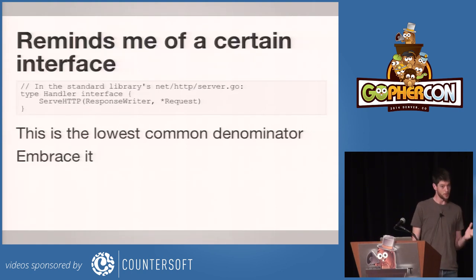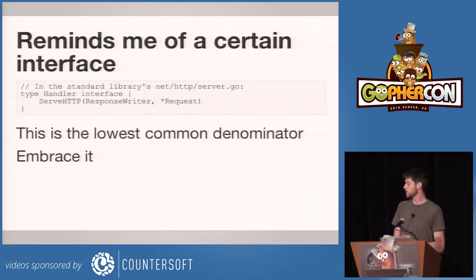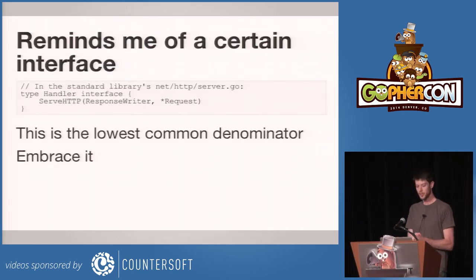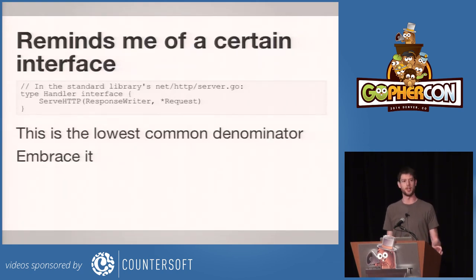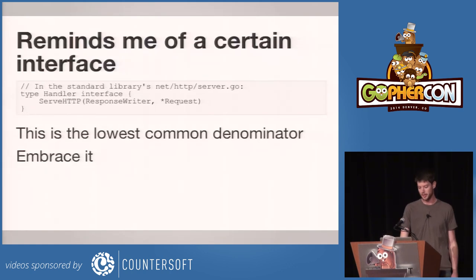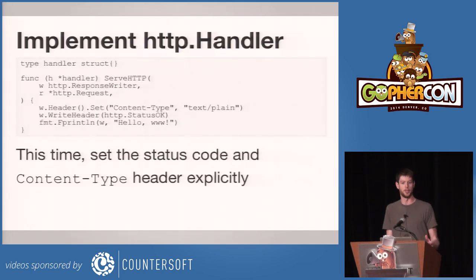There's one method — and this is important because these are the kind of interfaces that we can really reuse — one method called ServeHTTP that has that same signature: response writer, request pointer. This is the absolute lowest common denominator for a Go web service, for a Go web anything. And the rest of this talk is really to encourage you to embrace that, to use it to its fullest possible extent. So the first step is rewriting our dumb hello www example to use the actual interface.